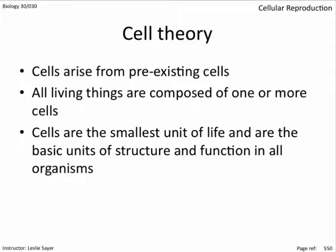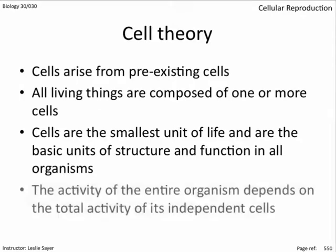Cells are the smallest unit of life and are the basic units of structure and function in all organisms. This combines a couple of theories. Once the idea of cells was forwarded to the modern scientific community, people still assumed that plant cells were fundamentally different from human cells, but observations of bacteria, plant, and animal cells showed that the basic premise of a cell — its structure and function — had a lot in common.